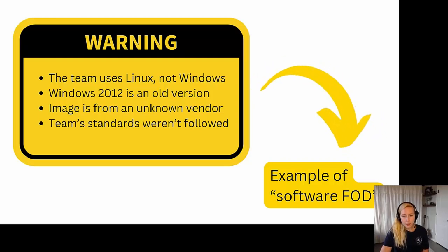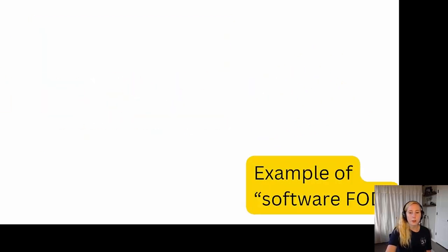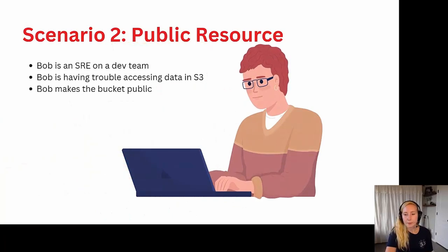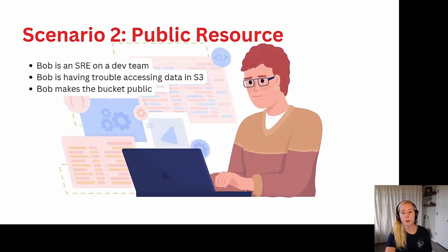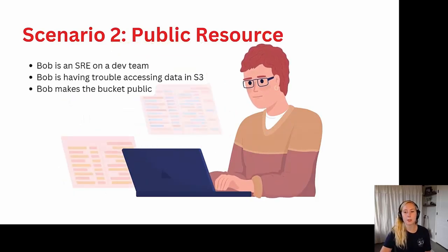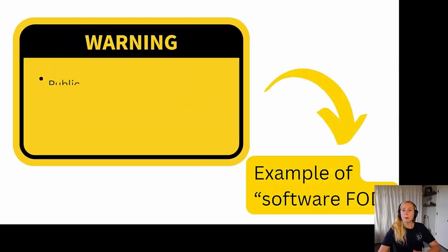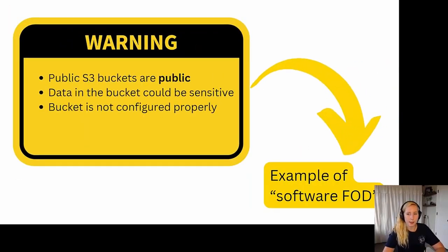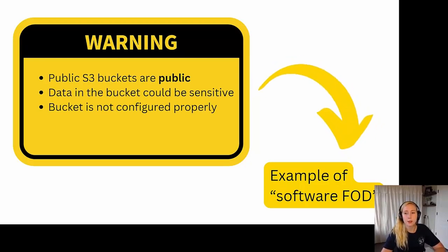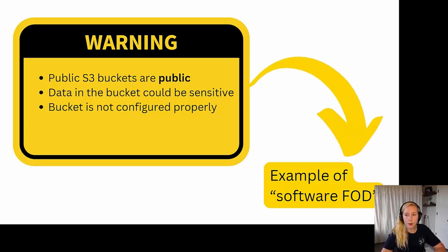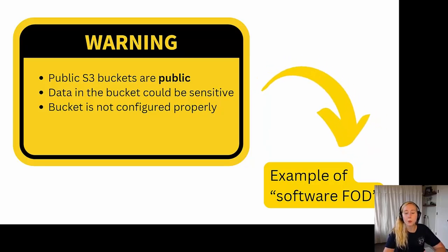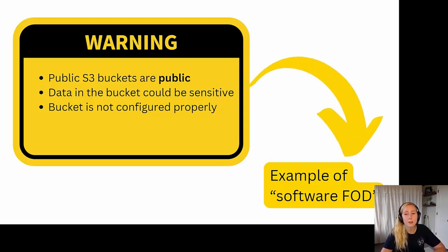In our second scenario, Bob is an SRE on a development team. Bob is having trouble accessing data he put in an S3 bucket, so he makes the bucket public to pull the data down to the resource that needs it. We know public S3 buckets are just that — public — and data in the bucket could be sensitive. There were other ways Bob could have configured the bucket to access it properly. This is an example of software FOD because it's a misconfiguration that only exists because of a temporary problem, but it will probably persist unless other measures are put in place.